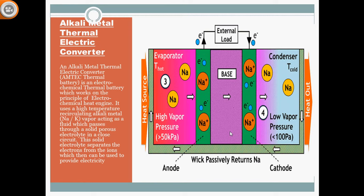When this battery is kept at a high temperature, the alkali metal — which may be sodium or potassium — acts as a vapor or fluid. In this figure, sodium vapor flows through the conductors. It has three main components: the evaporator, the wick, and the condenser. When heat is applied, the sodium vapor gains energy and its pressure increases up to 50 kilo Pascals.